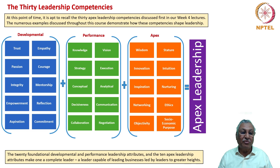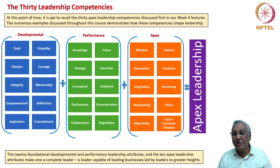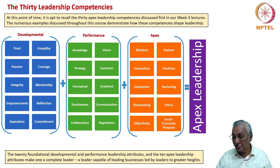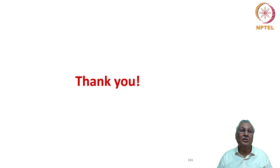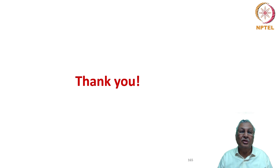If you have the occasion and time to go through any or all of those ten books, you will find that these thirty leadership competencies are expressed through the leaders' doggedness, commitment, passion, way of growing businesses, way of fighting against odds, and way of contributing to society. These thirty apex leadership traits must never be forgotten, having learned them through this course — they make one a complete leader, a leader capable of leading businesses to greater heights. With this we come to the end of this lecture, and I look forward to seeing you again.